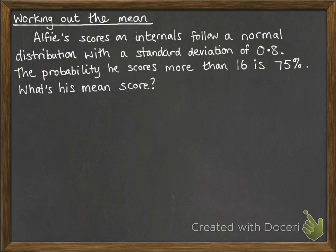So here's our example. Alfie's scores on internals follow a normal distribution with a standard deviation of 0.8. The probability that he scores more than 16 is 75%. What's his mean score?